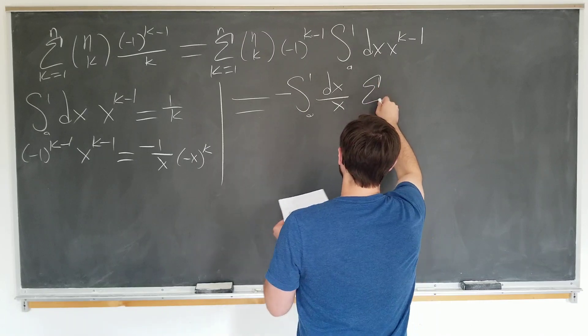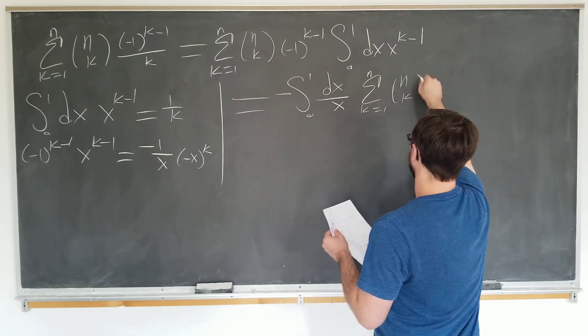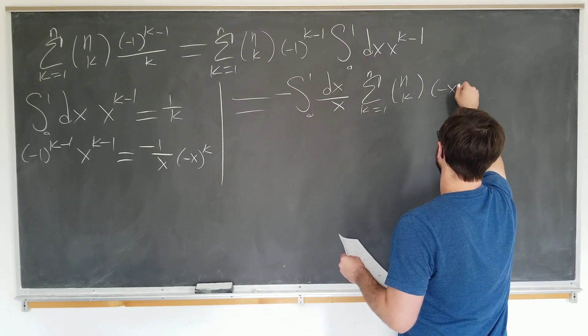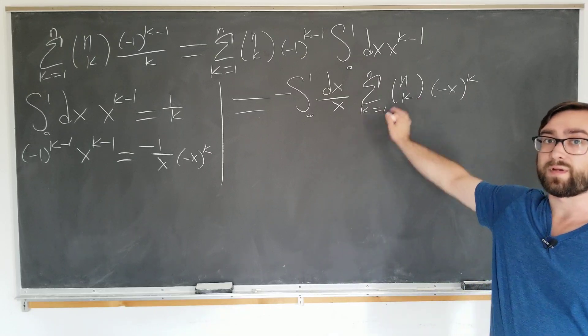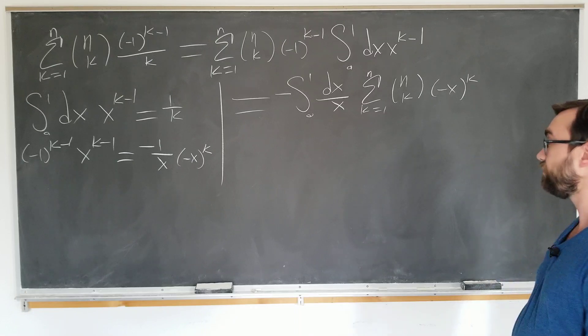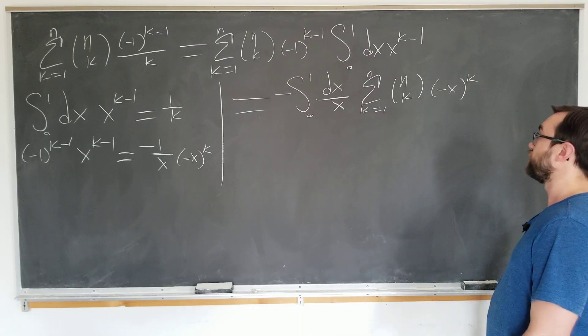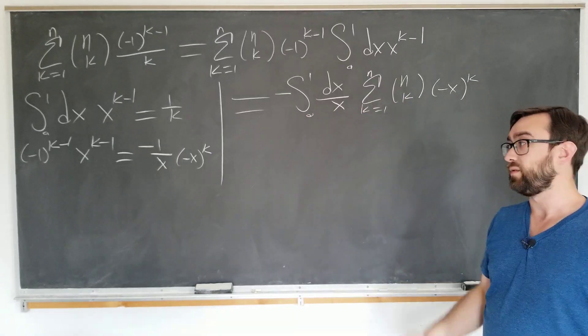So basically we have a sum here that looks something like a binomial series which we should know how to evaluate. So we're stripping away the alternating behavior so we can get to the binomial series. Which brings us to our third trick.